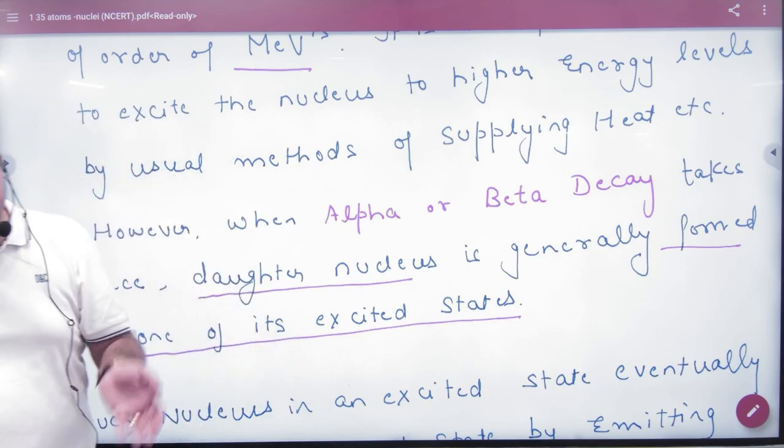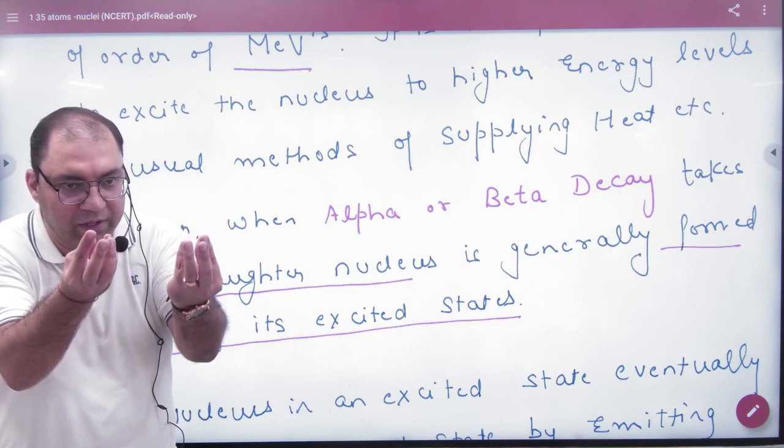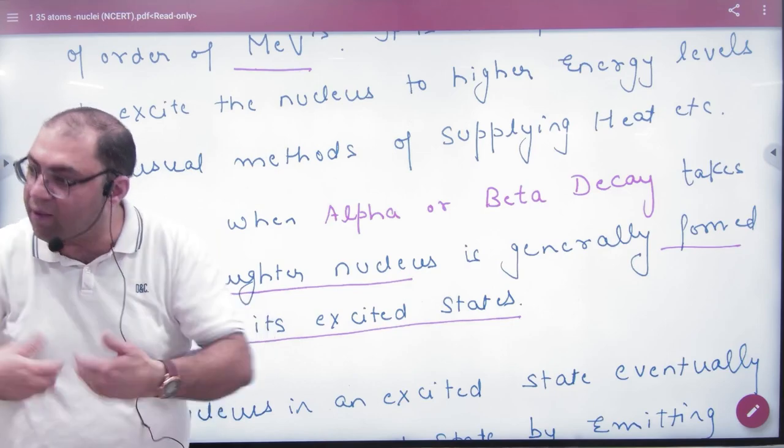When a big nucleus breaks into smaller ones, the small nucleus is in a high energy state. To come to the lower energy state, they emit gamma radiation.